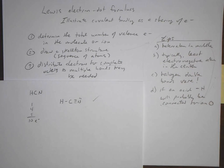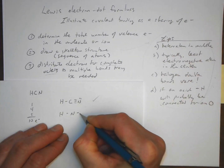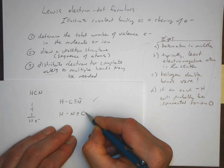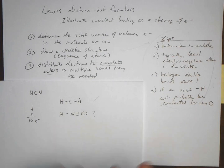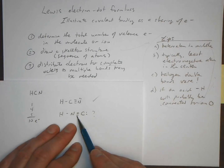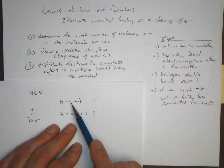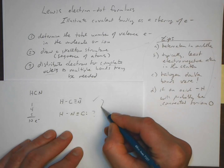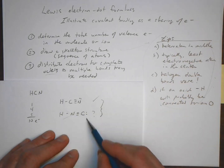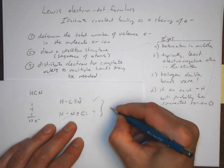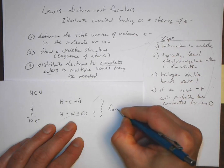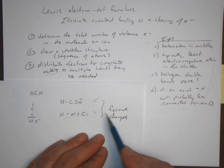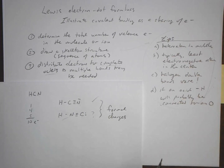You might ask why we can't use a different skeleton structure. From what we know so far, an alternative arrangement could seem reasonable. The least electronegative atom — carbon — is typically in the middle, which supports our structure. To decide between competing Lewis structures, we'll use something called formal charges, which we'll examine in another lecture.